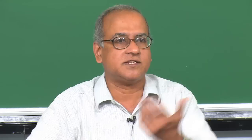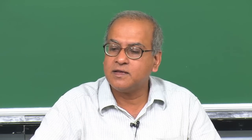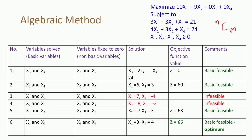As the number of variables and constraints increase, we have more solutions to evaluate. Out of all these solutions we leave out the infeasible ones and look only at the basic feasible ones. If we have n variables and m equations, we end up creating nCm solutions. In this example, n = 4 variables and m = 2 constraints, so 4C2 = 6 solutions.